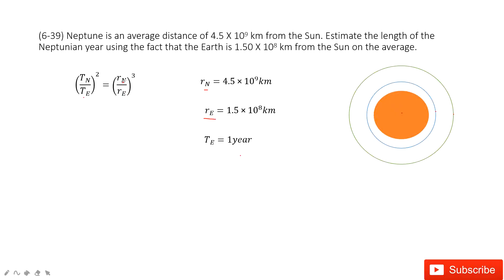You can see now the Rn, Re, and Te are given. So after you input these numbers, you can find the value for Tn, the period for Neptune.